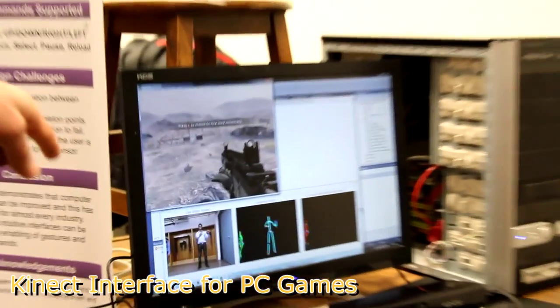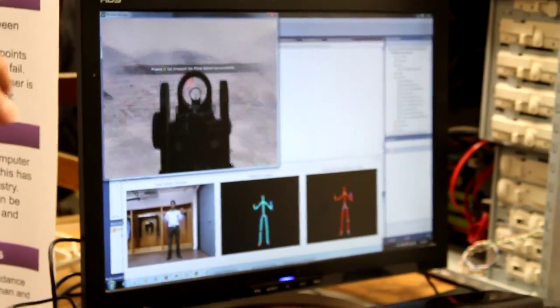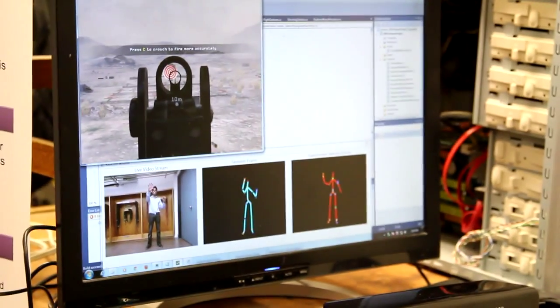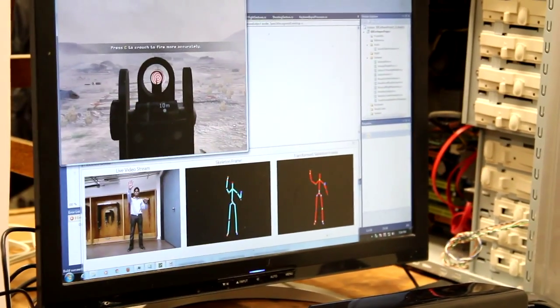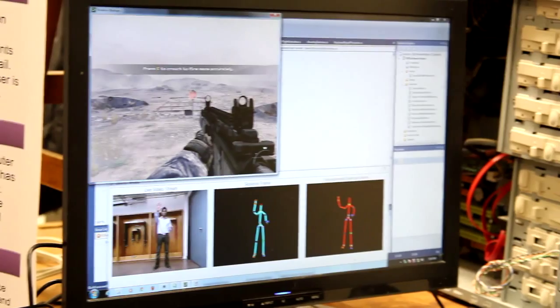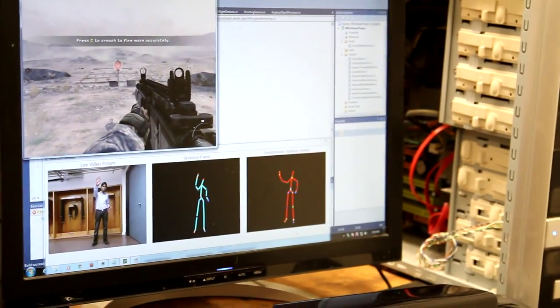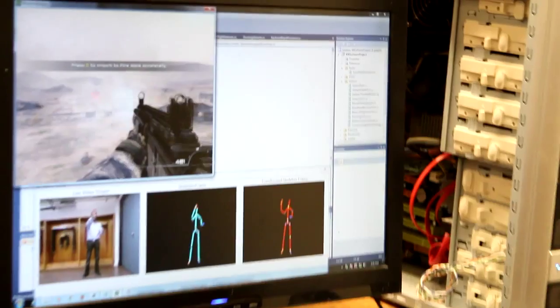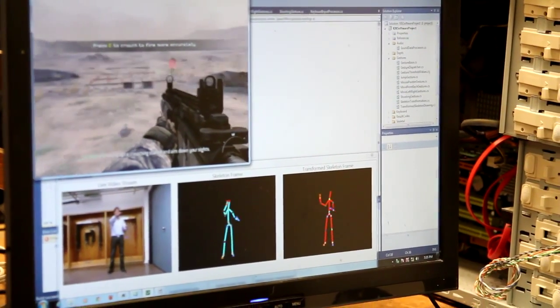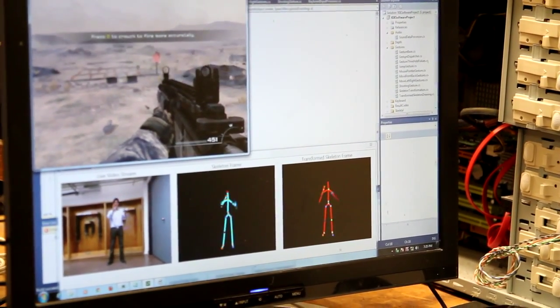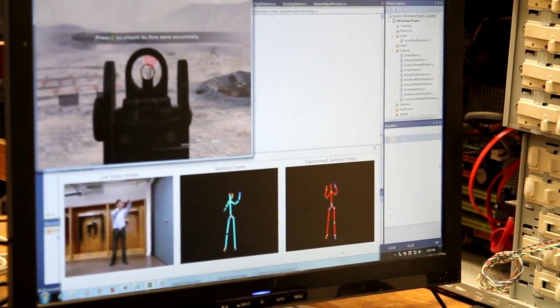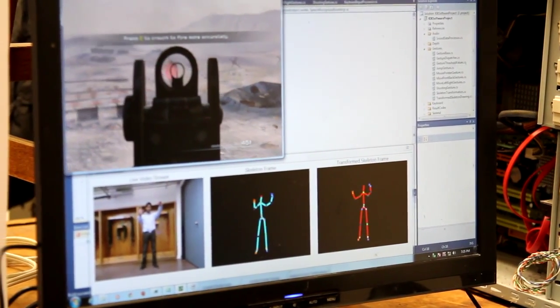On the screen you can see that his skeleton is being tracked and you can also see the video screen. Our program tracks synthetic joints on his skeleton and tries to detect a gesture that he is doing. Right now he is aiming. He does that by moving his left arm and the mouse will move on the screen.